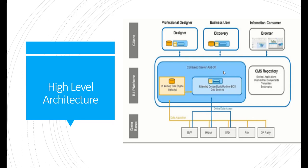The server add-ons are added to reduce IT admin cost and to make use of most features available with Lumira Designer. On the database side, we can connect to BW views, HANA views, universes, file-based sources, or any third-party database files. Data acquisition is handled on the server add-on components, which designers then use to create powerful dashboards.